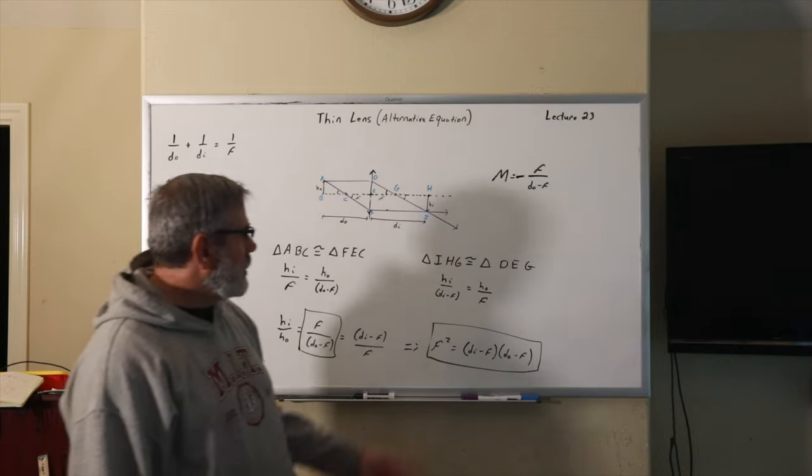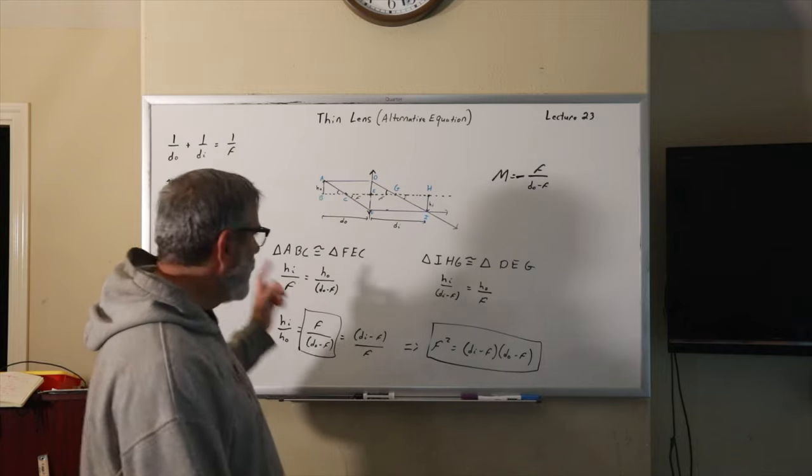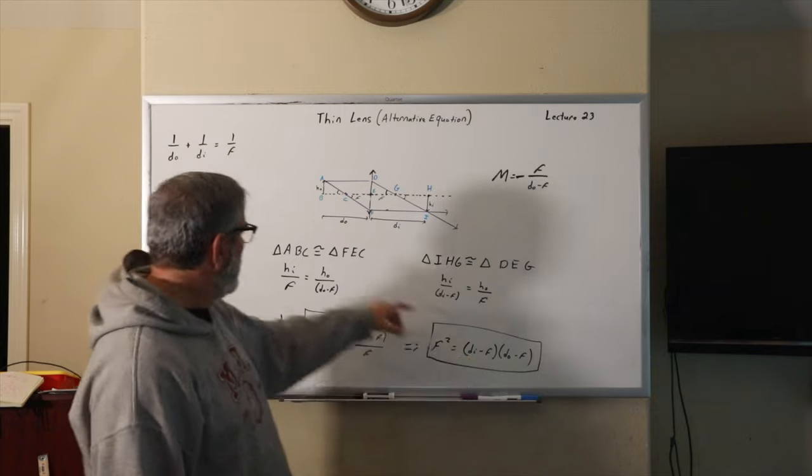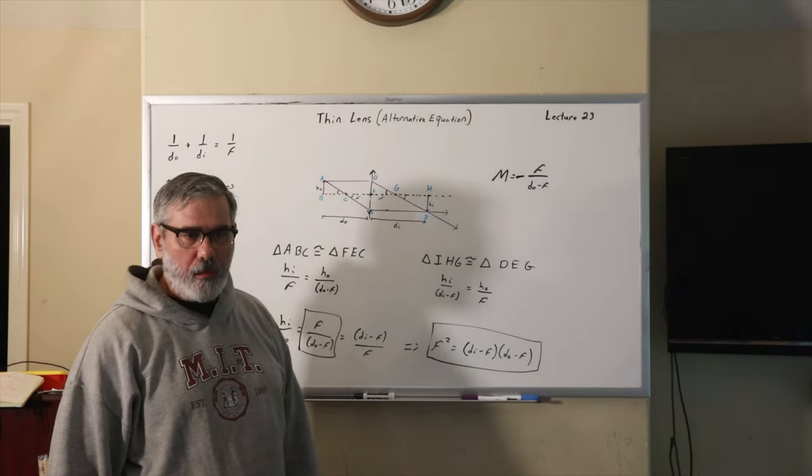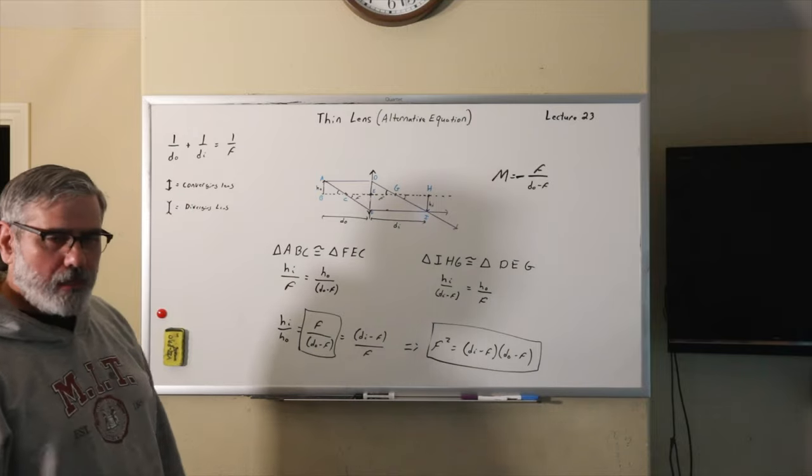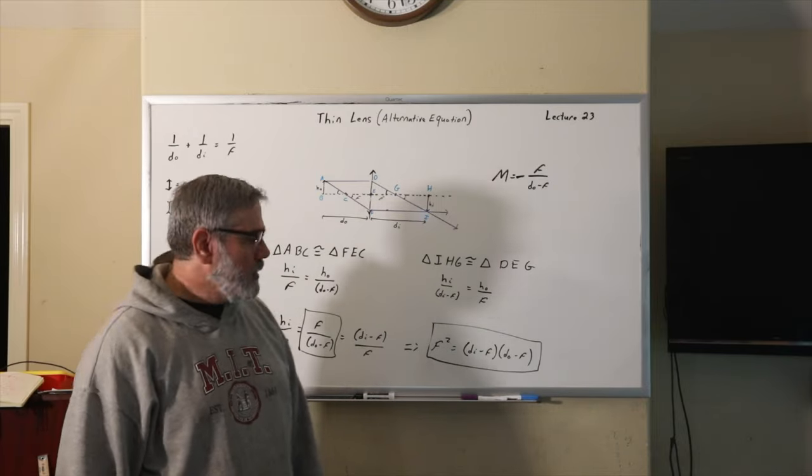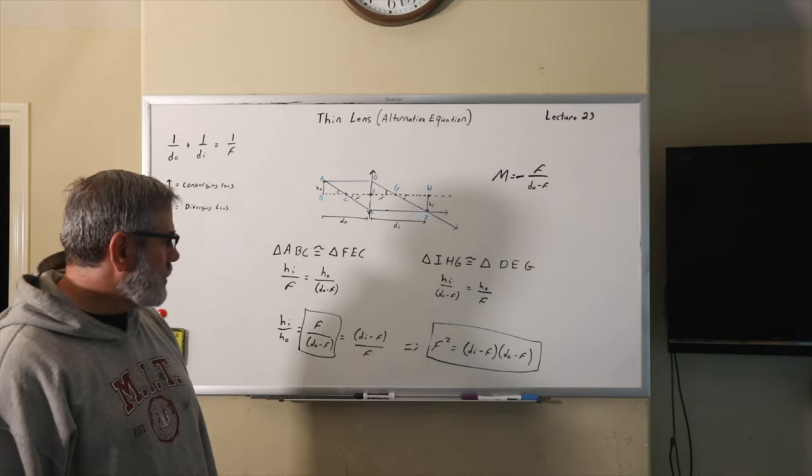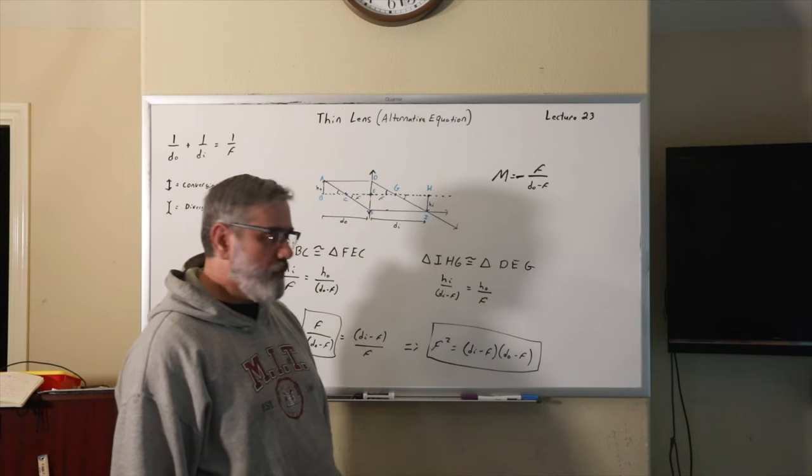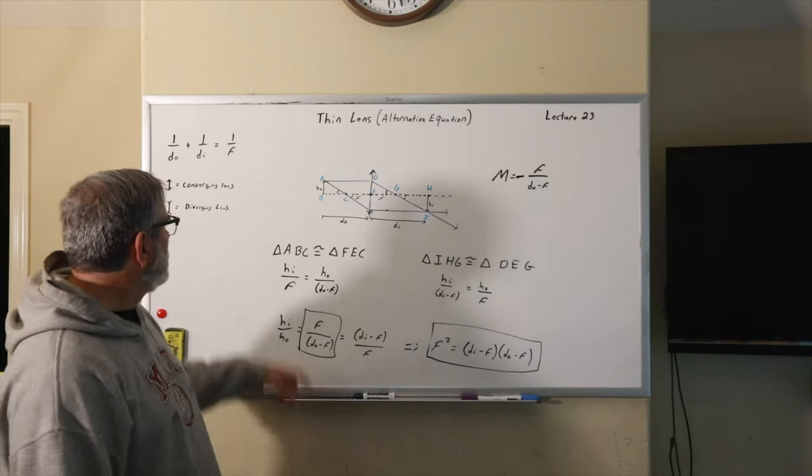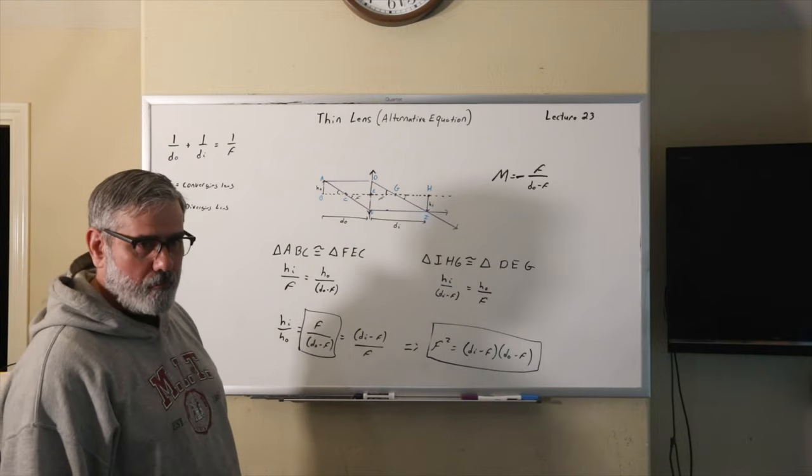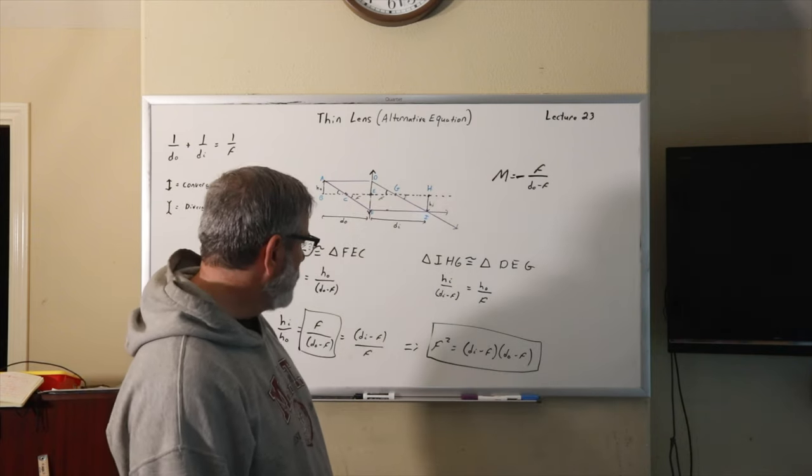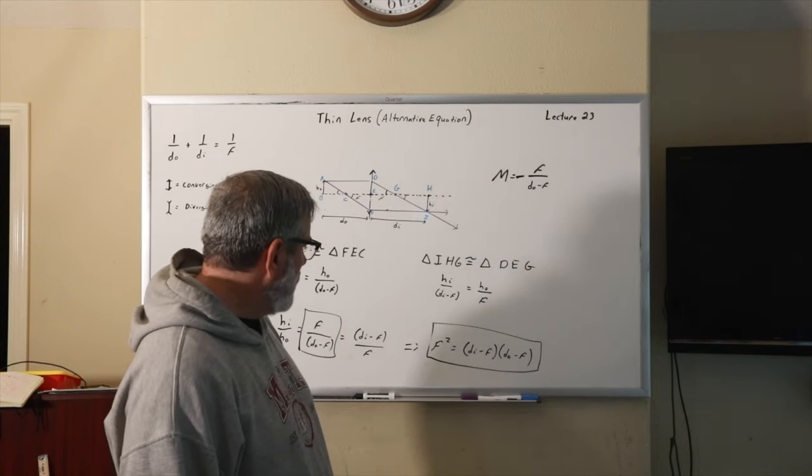And so in the next little lesson, we'll see an example of that. Any questions? This and this are just two forms of the same thing. You might leave it as an exercise to show that that's the case. It's just a little algebra. But this can sometimes prove to be useful. And that there, F squared equals D sub I minus F times D sub O minus F, is the same as one over DO plus one over DI equals one over F? Yes.